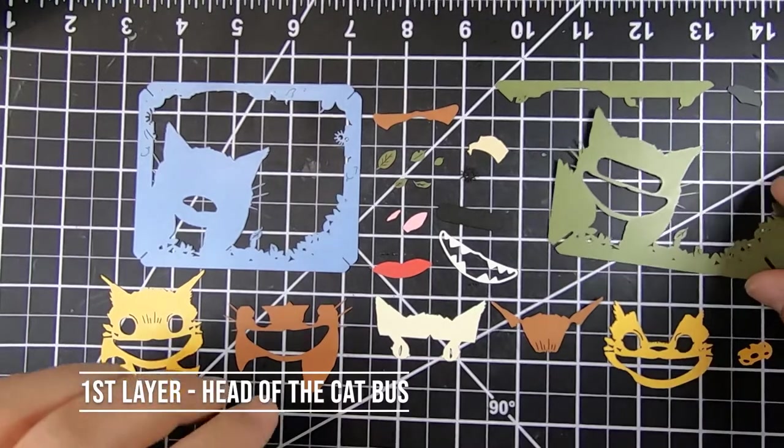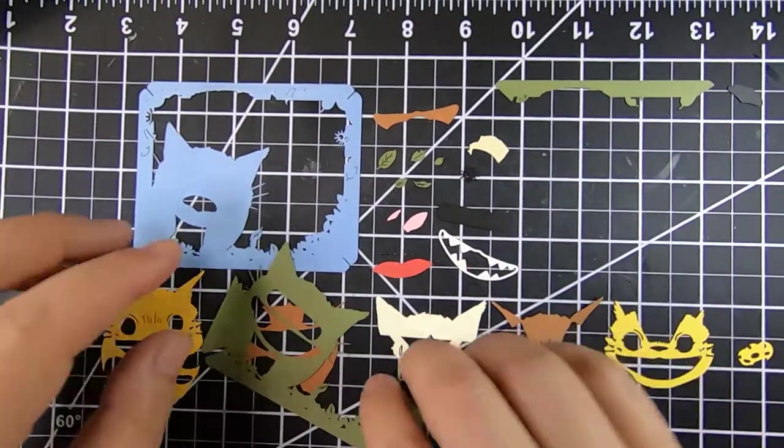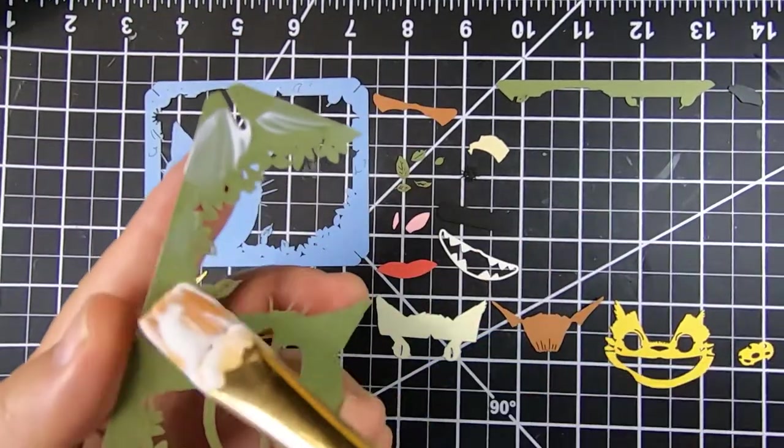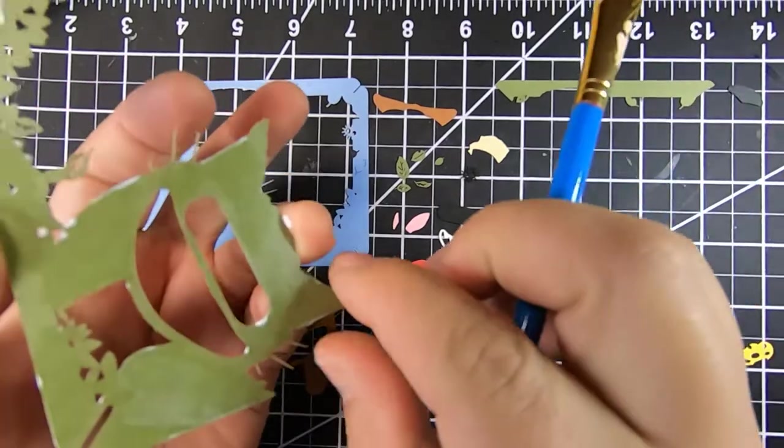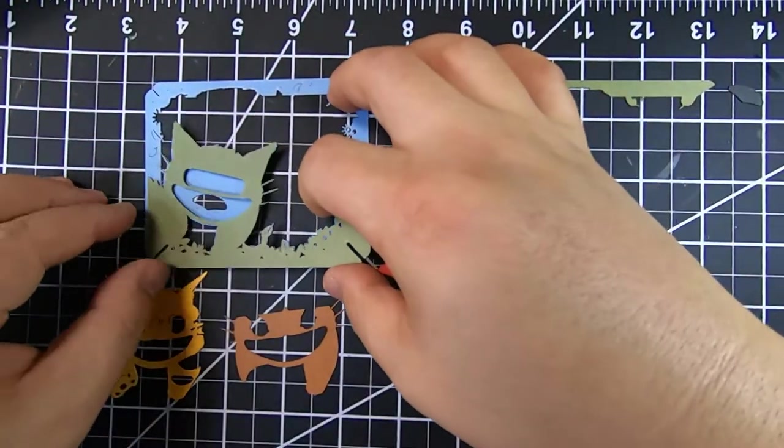For each layer that I'm working on, and there's a total of six, I actually like pre-cutting all the pieces. It's actually very simple because you just use an exacto knife and disconnect the parts that are connected to the sheet.